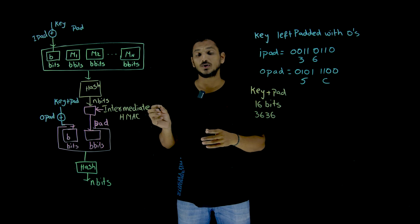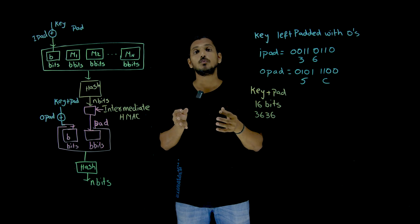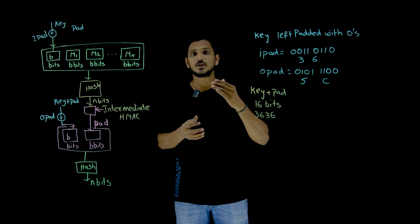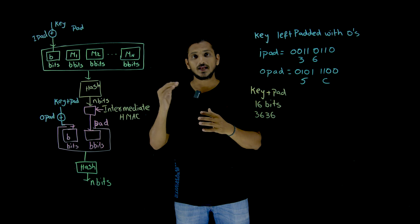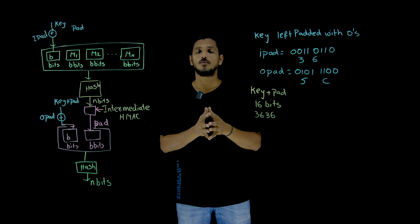In our last class, we clearly discussed about MAC message authentication code. There we discussed that in order to provide more complexity in the hash function, we are going with two levels of hash function. So in HMAC, we are going with two levels of hash function to provide more complexity.